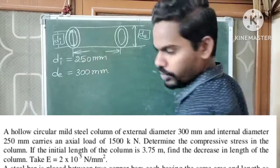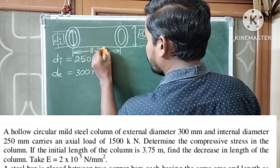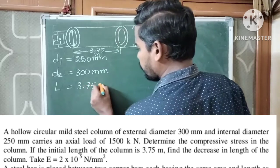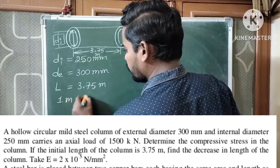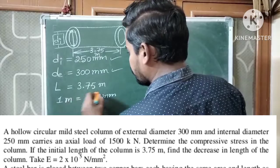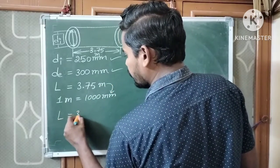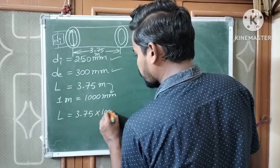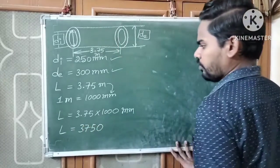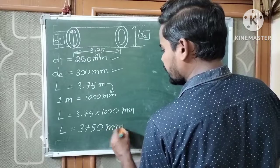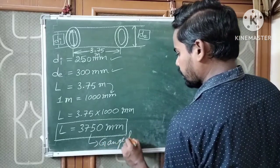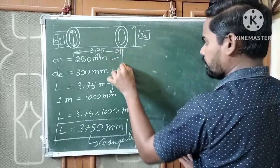The initial length is 3.75 meters. Initial length means gauge length. We know that 1 meter equals 1000 mm, so let us convert meters into millimeters since the diameters are already in mm. Therefore, L = 3.75 × 1000 = 3750 mm. So the gauge length of the column is 3750 mm.